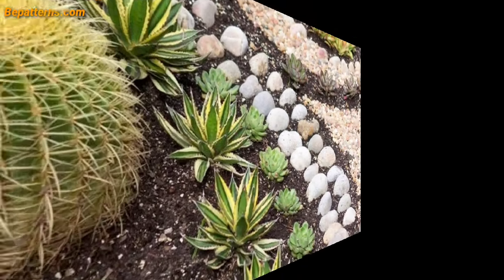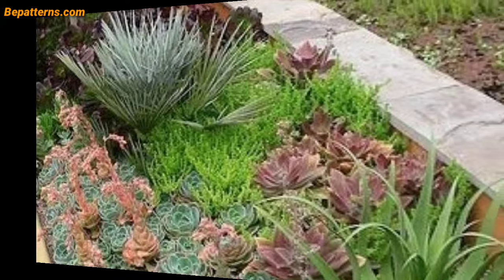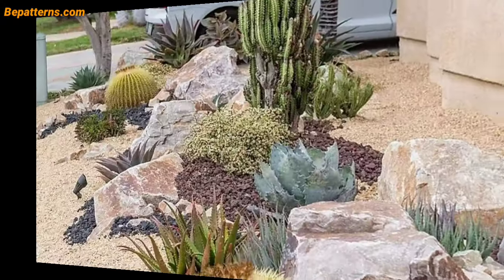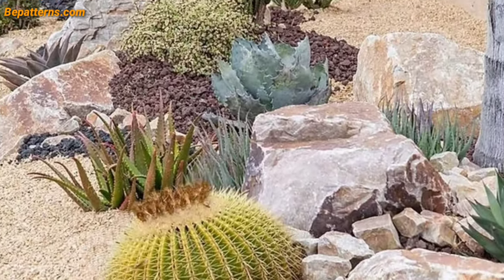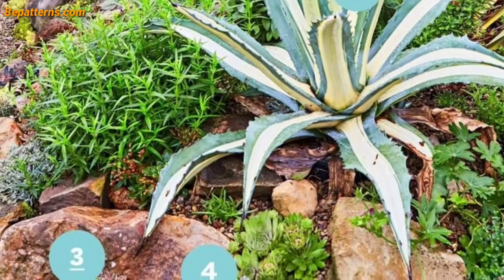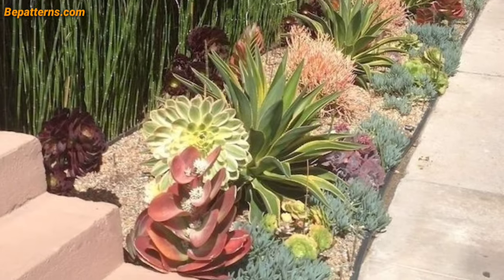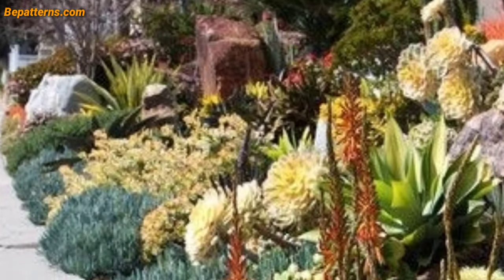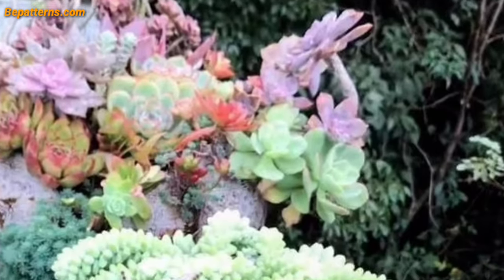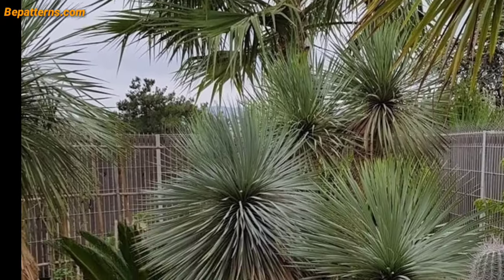Creating a visually appealing succulent garden often involves more than just the plants themselves. Here are some decoration ideas to enhance your succulent garden. Choose unique and colorful pots or containers to plant your succulents — this can add a touch of personality to your garden. Create a mini succulent ecosystem in a glass terrarium, which can be displayed on tables or hung in your garden. Arrange decorative rocks and pebbles around your succulents to mimic a natural desert landscape.